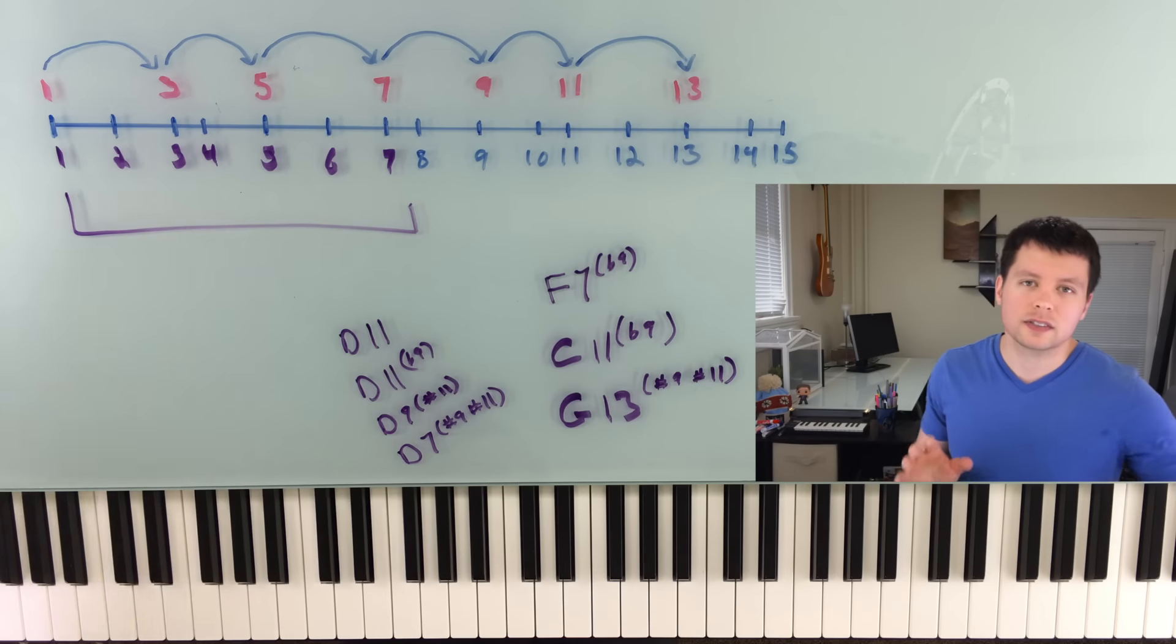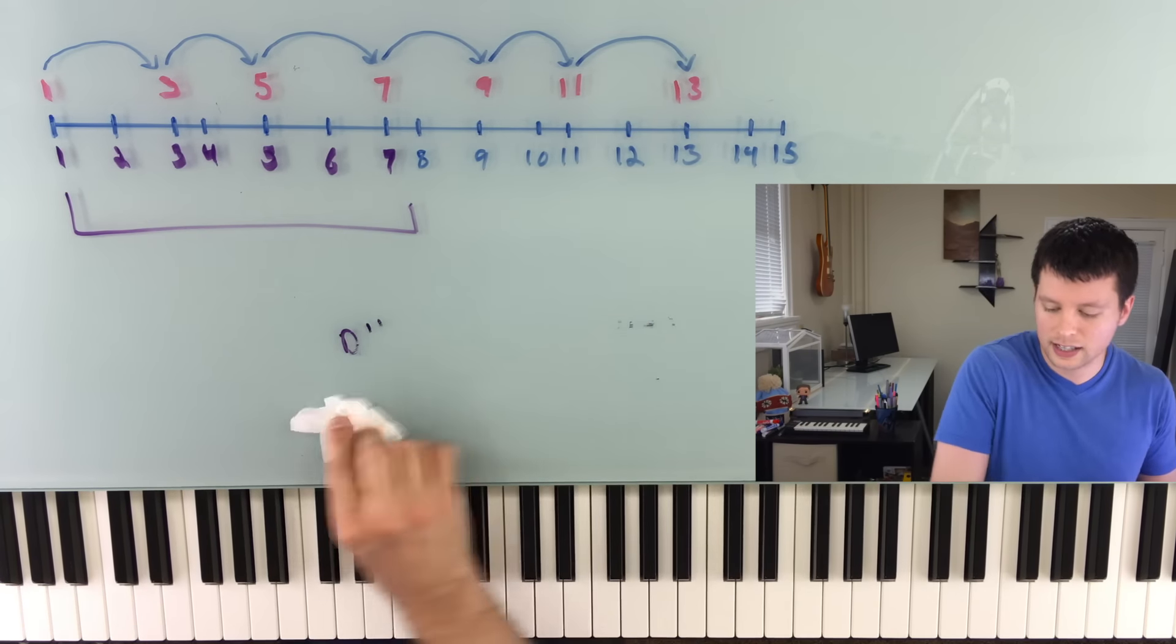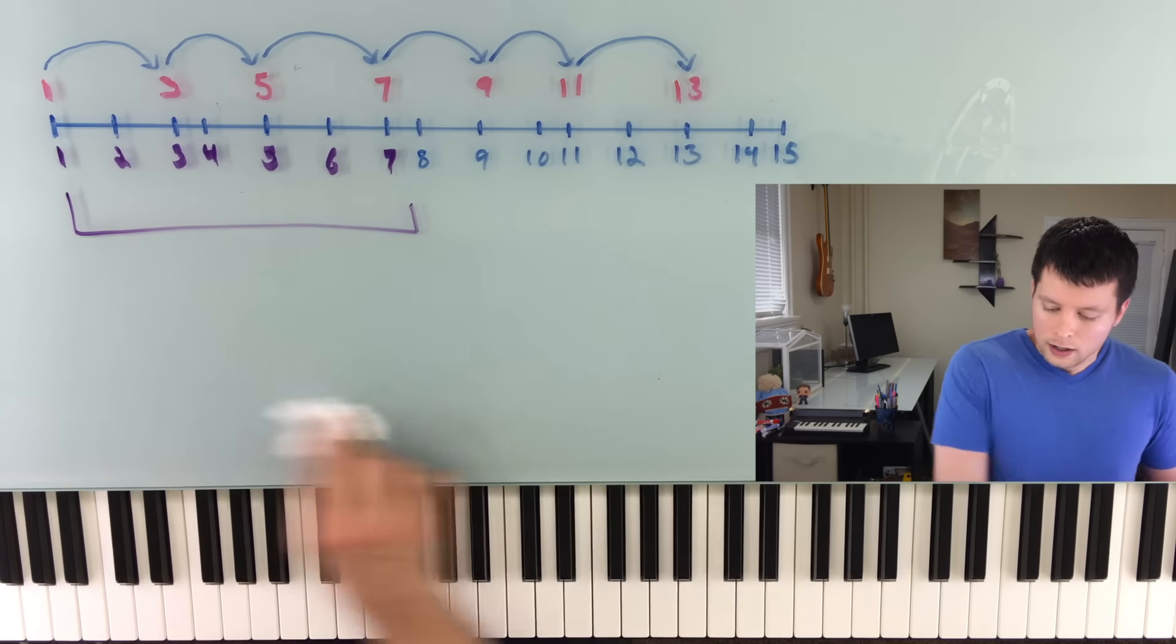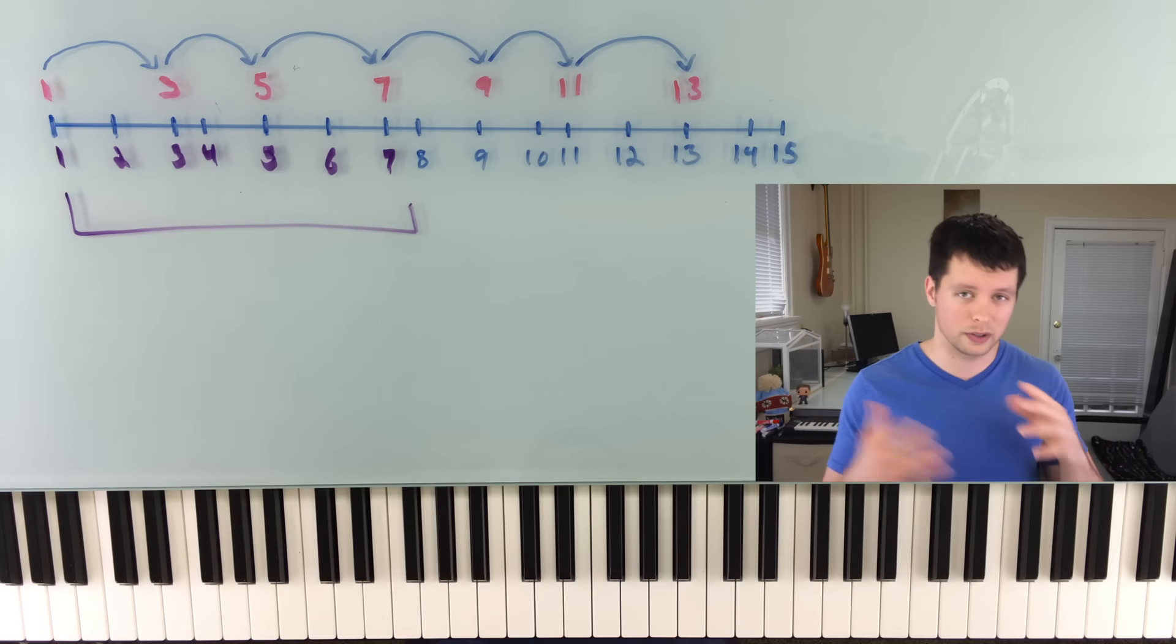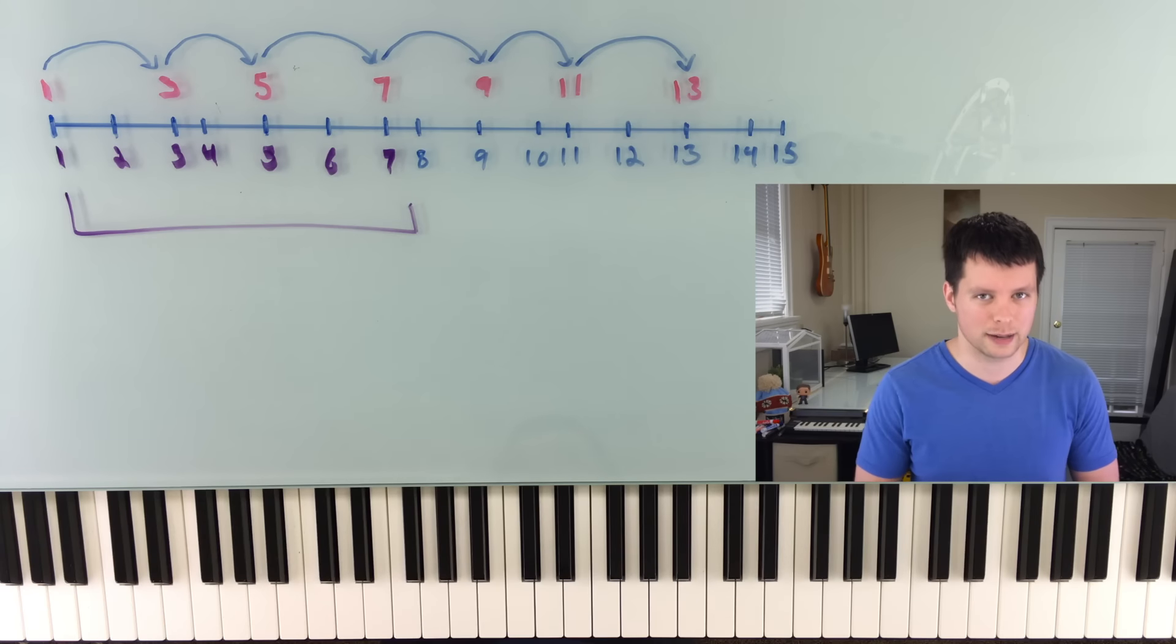So anyway, that gives us a way to talk about this stuff. We can correctly identify or name whatever chord. Now on paper, taking a chord and saying sharp 9 or flat 9, whatever, it all is perfectly simple. But in practice, a lot of these actually don't make that much sense. And I'll show you a couple.